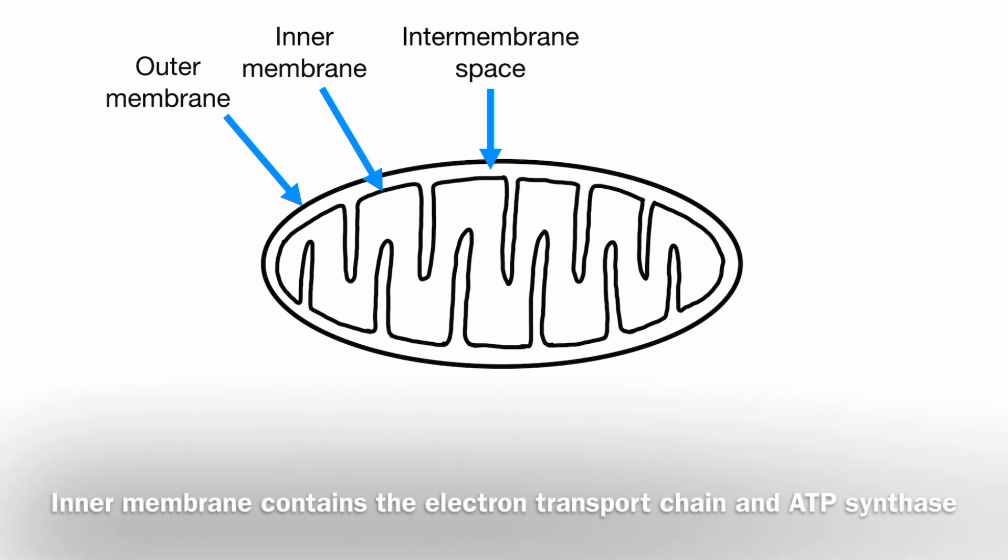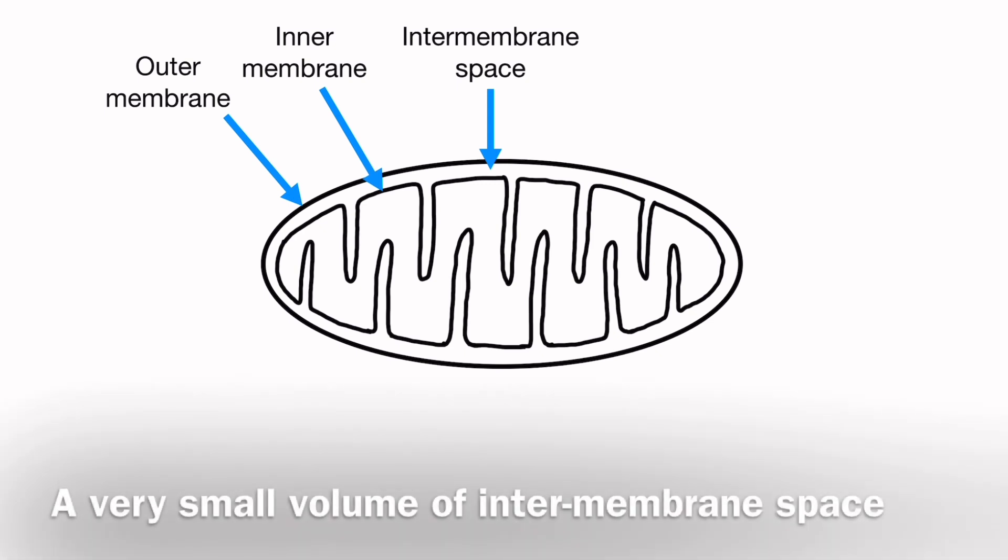The inner membrane contains the electron transport chain and ATP synthase, and these are also specifically parts of the process of respiration. At this point, the most important thing to remember is that we have a very small volume in the intermembrane space. This means that we can have a high concentration buildup there of, for example, hydrogen ions, and these are involved in the process of respiration.